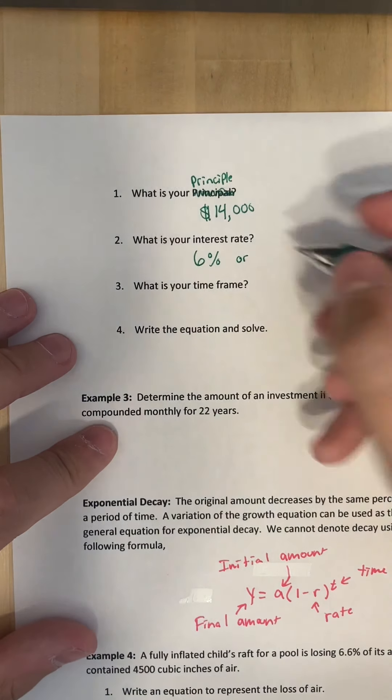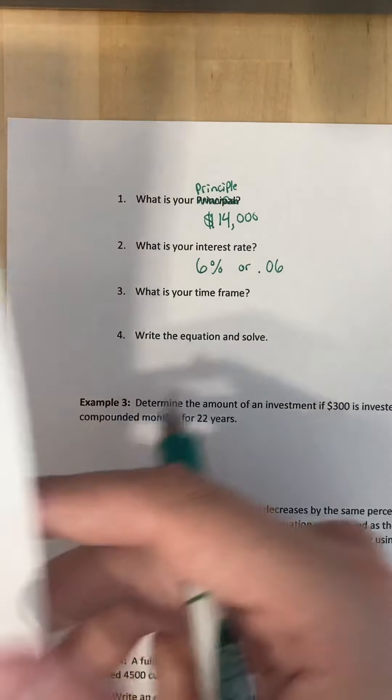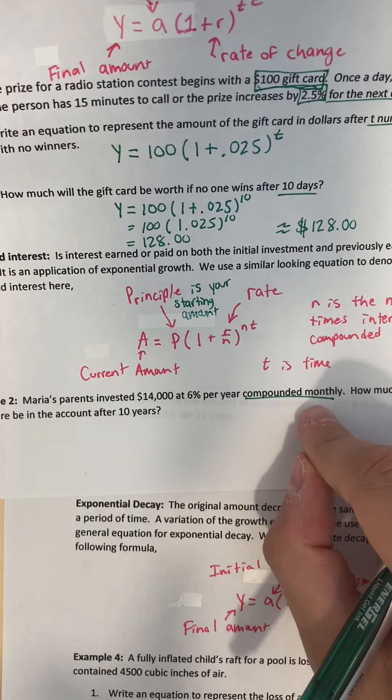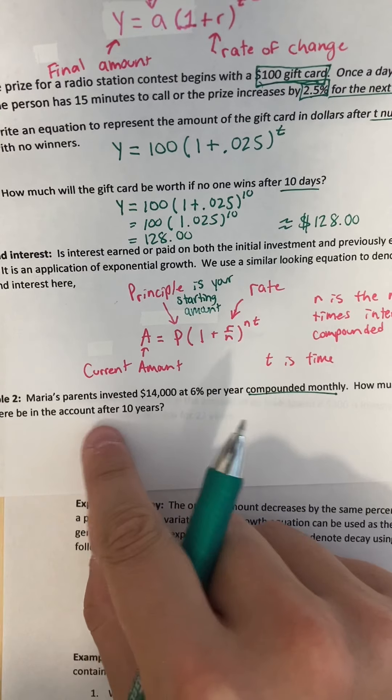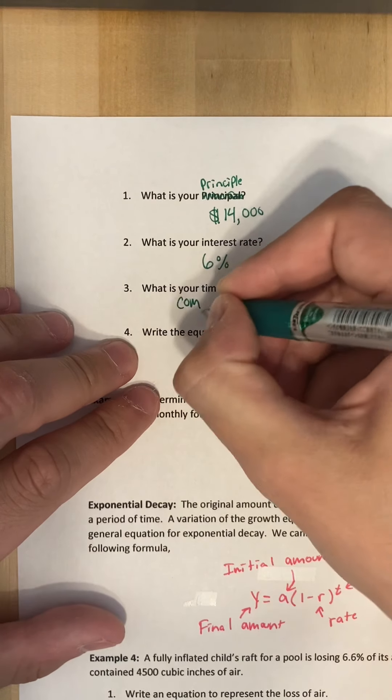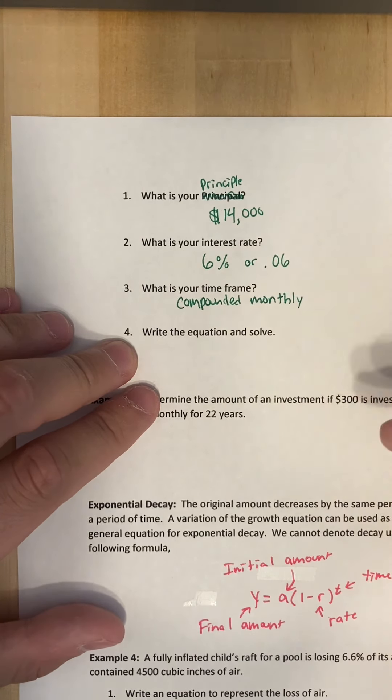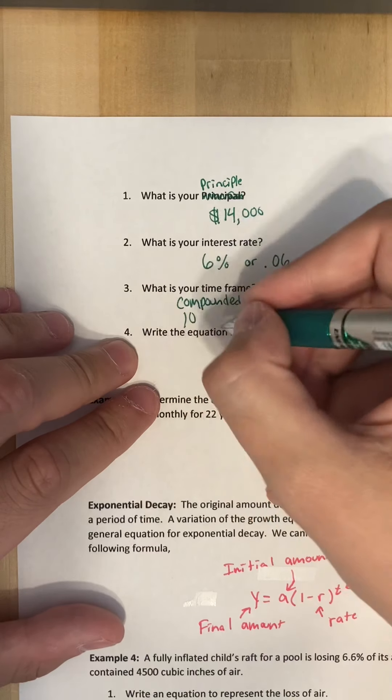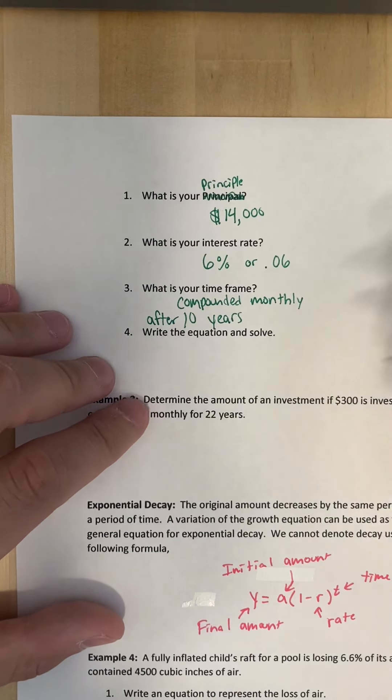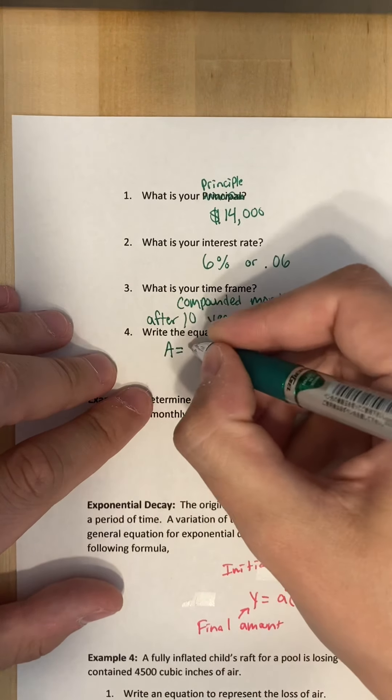What is your time frame? Well I know it's compounded monthly, so let's keep that in the back of our minds. And we want to know after 10 years. So compounded monthly, and we want to know after 10 years. Okay, so let's put it all together. Write and solve the equation. Let's rewrite the equation. It was A equals P times one plus r over n to the nt.